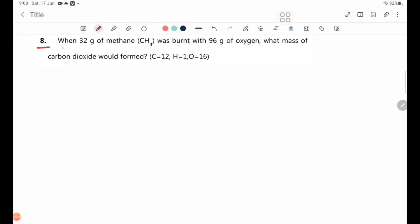Number 8: When 32 grams of methane CH4 was burnt with 96 grams of oxygen, what mass of carbon dioxide was formed? Methane 32 grams, oxygen 96 grams. Let's look at the balanced equation.